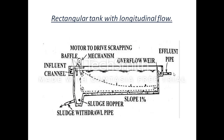The rectangular tank with longitudinal flow is rectangular in shape. As shown in the figure, it has an inlet from where water enters and flows slowly in the horizontal — longitudinal — direction, then leaves through an outlet on the opposite side. Baffles are provided at the inlet and outlet so that raw water is not mixed with the treated water. A baffle is essentially a kind of wall.